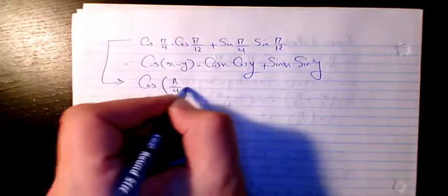So we can say this will be equal to cosine pi over 4 minus pi over 12.